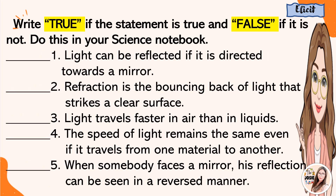Let's check your answers. For number 1, light can be reflected if it is directed towards a mirror. The answer is true. Second, refraction is the bouncing back of light that strikes a clear surface. It is true.